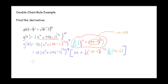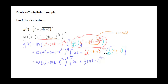We're almost done. Copying down: we have 1/2 times (4t minus 1) to the negative 1/2, and we need to complete the last part. Note that it should be d/dt, not d/dx — those x's should be t's. The derivative of (4t minus 1) is just 4. So there's our derivative for that example.